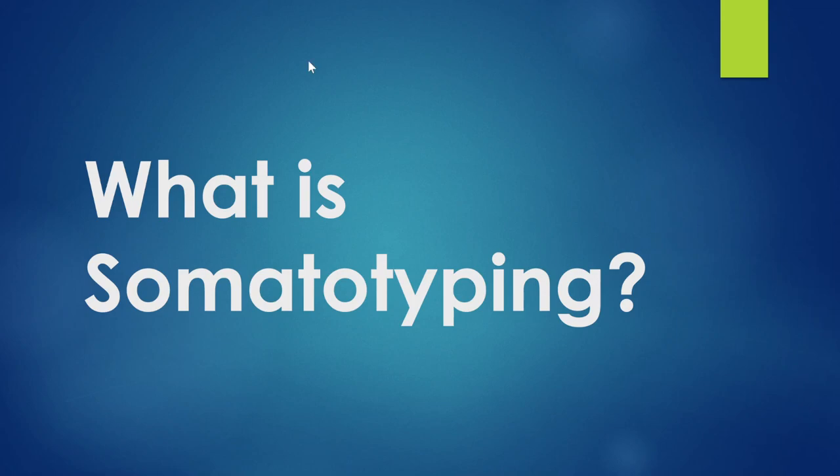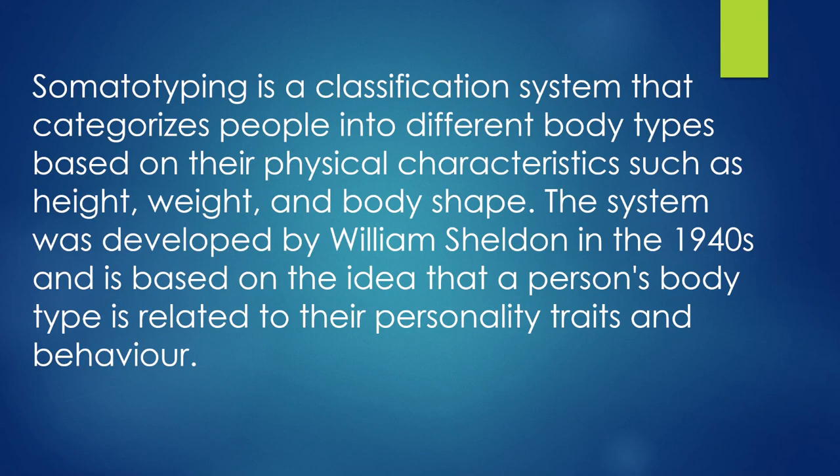Welcome back to my channel. Today in this video we will learn about somatotyping. Somatotyping is a classification system that categorizes people into different body types based on their physical characteristics such as height, weight, and body shape. The system was developed by William Sheldon in the 1940s and is based on the idea that a person's body type is related to their personality traits and behavior.